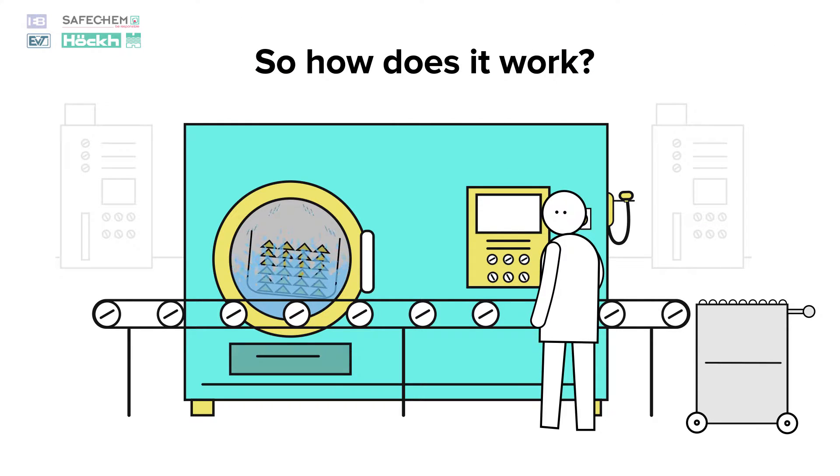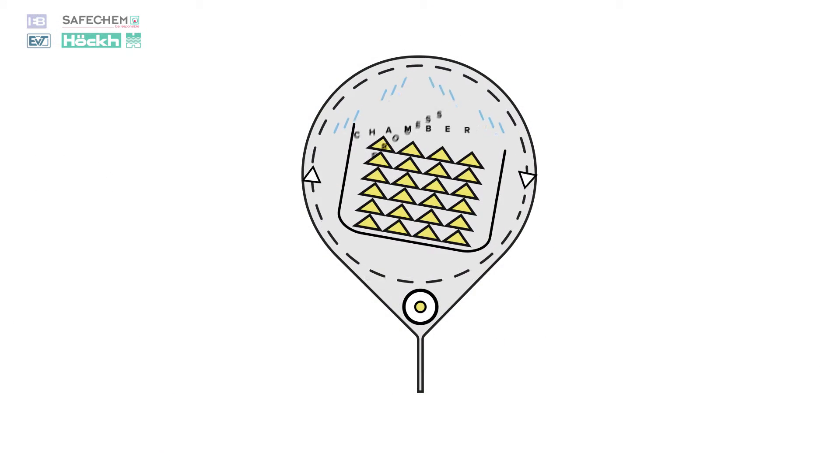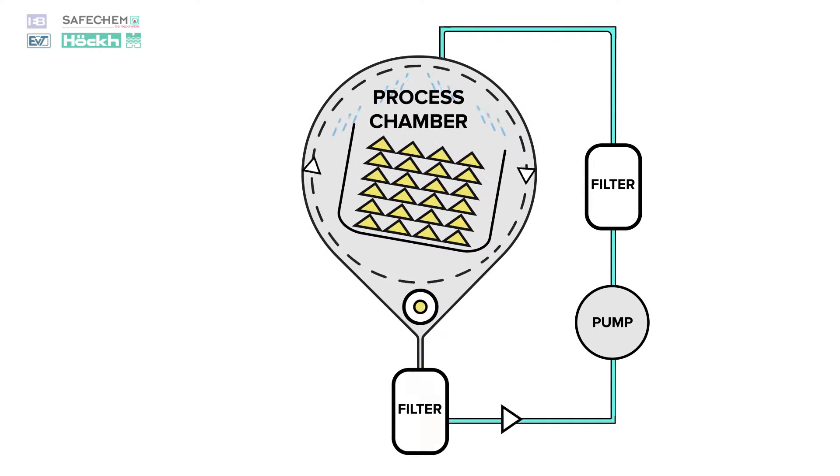So how does it work, you might ask? Let's take a closer look inside. The process starts by spraying the parts in a filtered circuit to remove the contamination.